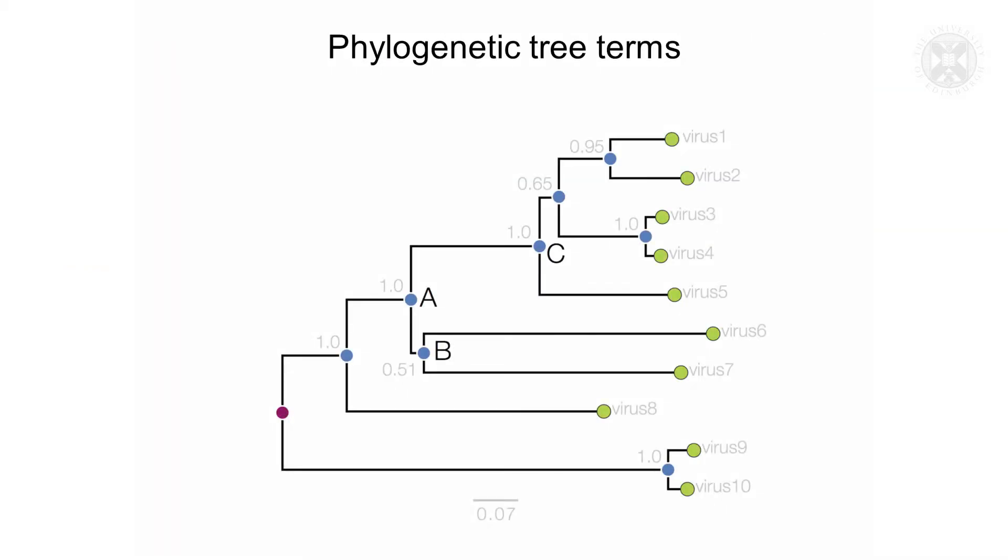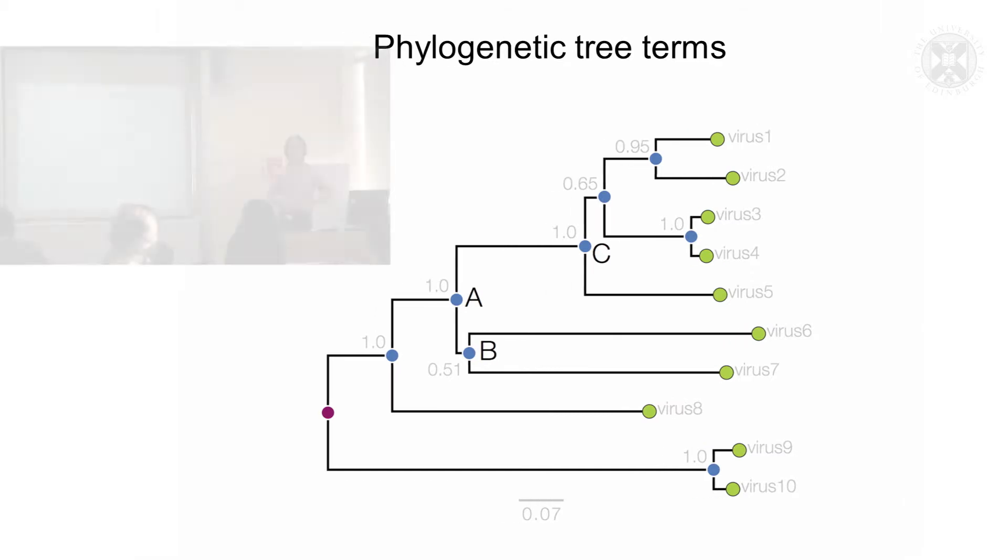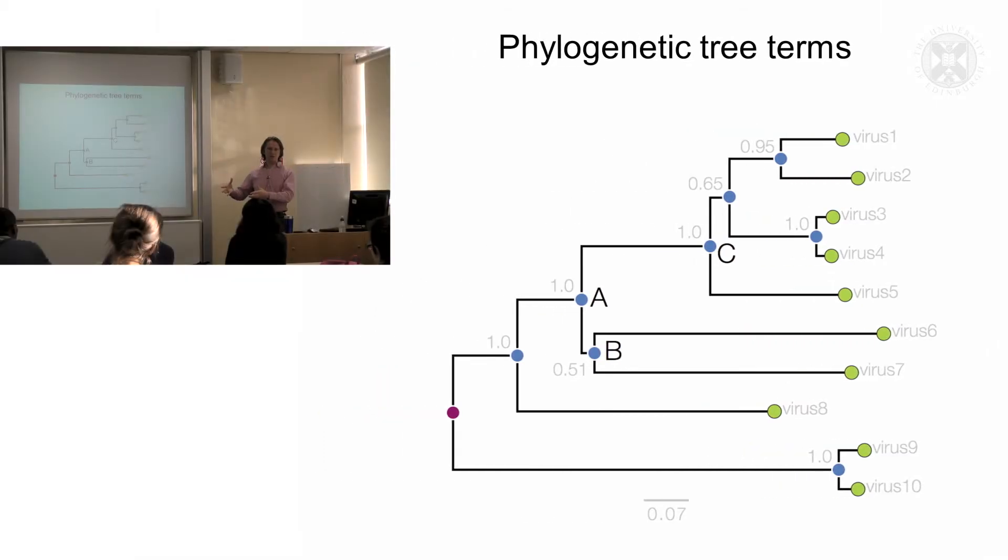This is the same tree and we have indicated here in green. These are called the tips of the branches. Also some people would refer to these as the leaves on the branches. Lots of tree analogies here. And these of course are what we've actually sampled. So these are the virus sequences. We know quite often more about these viruses. We might know what kind of host they were isolated from.